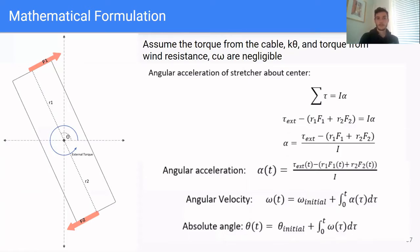For the mathematical formulation, we assume that torque from the cable and torque from wind resistance are negligible. Using this, we can derive the angular acceleration of the stretcher about its center, given an external torque, moment arm, and actuator thrust. Finally, we can calculate the angular velocity of the stretcher over time using calculus.